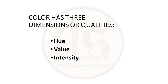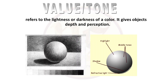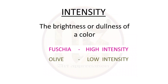Every color has three dimensions or color qualities: hue, value and intensity. Hue refers to the name of a color — a red hue, yellow hue, violet hue, and so on. Value or tone refers to the lightness or darkness of a color. By giving value and tones, you give depth and perception to any object. A circle starts looking like a sphere or a ball when different values of color are added — middle tones, highlights, shadows. Intensity means brightness or dullness of a color. Fuchsia or magenta are high intensity because they capture our attention immediately. Olive green is low intensity — like the camouflage uniform of army men that blends into the foliage.